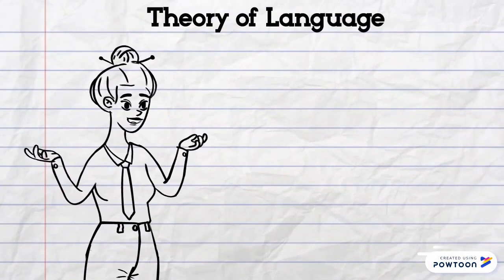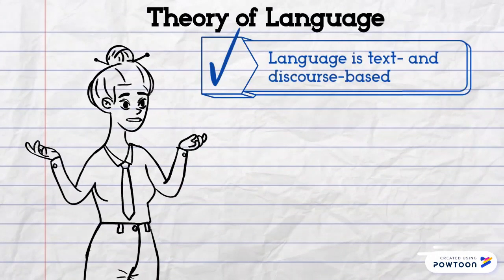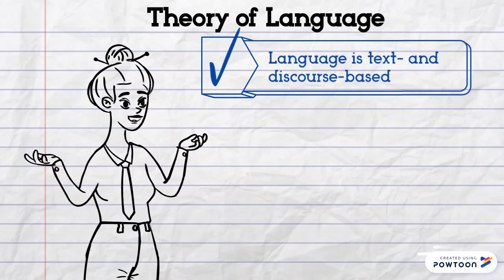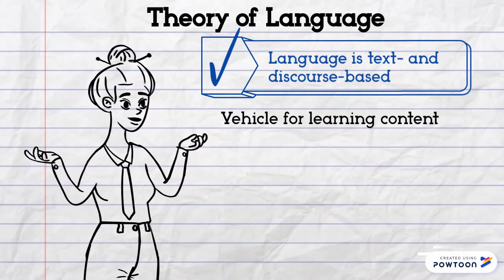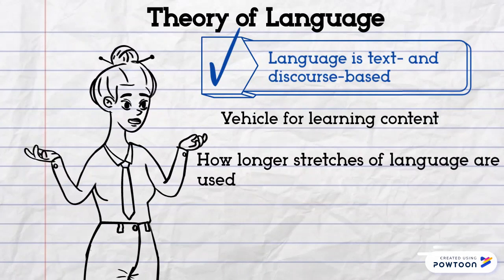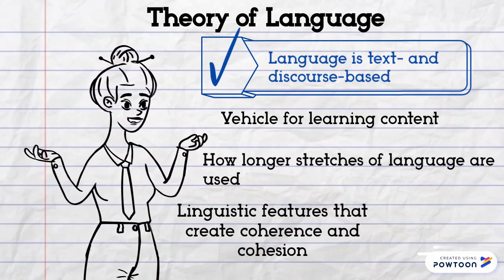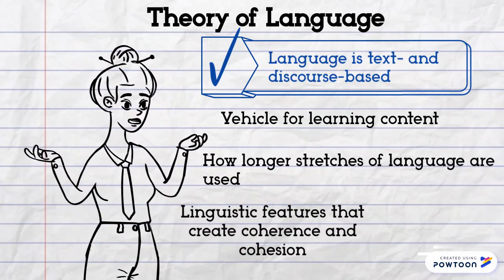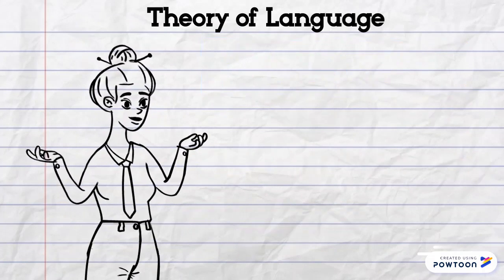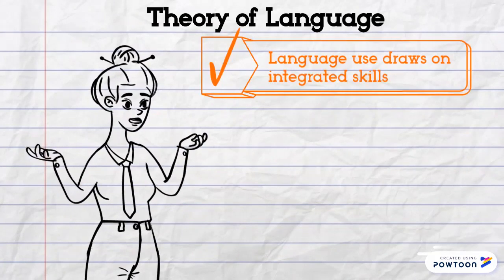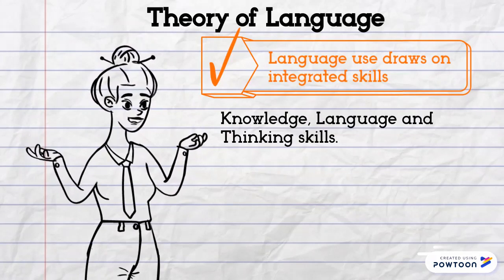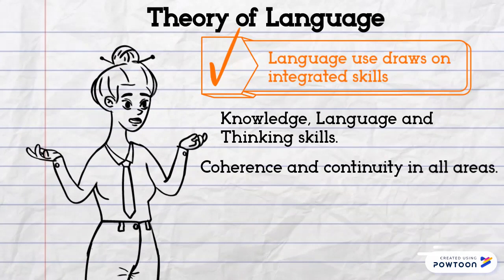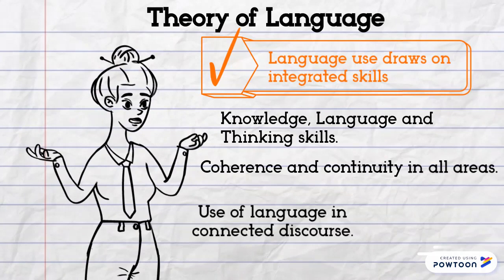Certain assumptions about the nature of language determine content-based instruction. Language is text and discourse-based: CBI sees language as a vehicle for learning content and centers on linguistic entities that account for how a stretch of language is used, including the linguistic features that create coherence and cohesion within speech events and text types. Language use draws on integrated skills: in a content-based class, students are involved in activities that link skills, knowledge, language, and thinking. Topics selected provide coherence and continuity across skill areas and focus on the use of language in connected discourse.